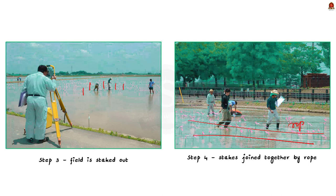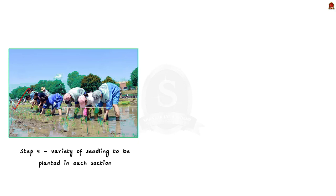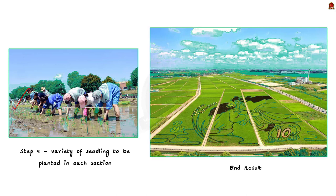Then the farmer decides the variety of seedlings to be planted in each section. Next, the rice fields are finally planted — this is how the huge edible art is created. Since rice is the staple food of Japanese people, after the rice plants are harvested, the rice is milled into polished rice and given out to those who participated in the event, used as a treat for lunch at that event.